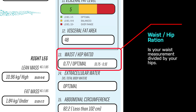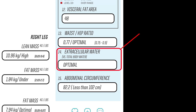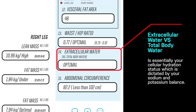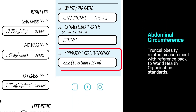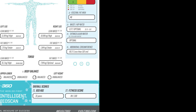Number 13 is your waist-to-hip ratio measurement, which is your waist measurement divided by your hips. This is an obesity-related measurement used to ascertain truncal obesity. Number 14 is your extracellular water versus your total body water measurement, which is essentially your cellular hydration status, which is dictated by your sodium and potassium balance. Number 15 is another truncal obesity-related measurement of your abdominal circumference with reference back to World Health Organization standards.